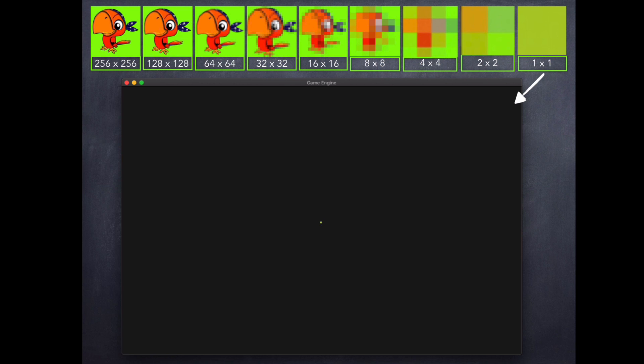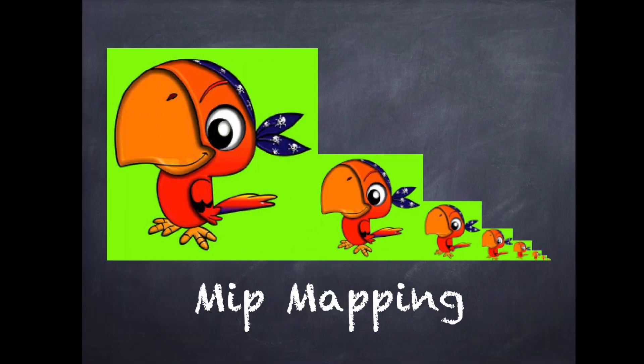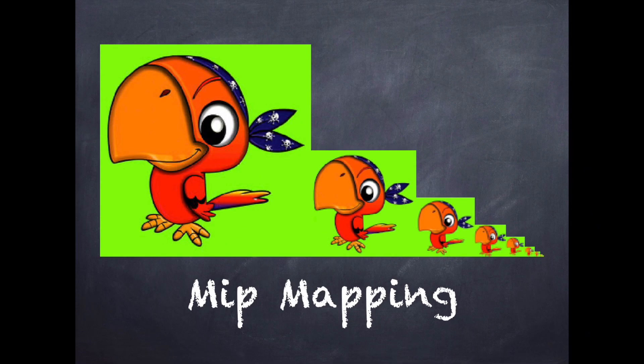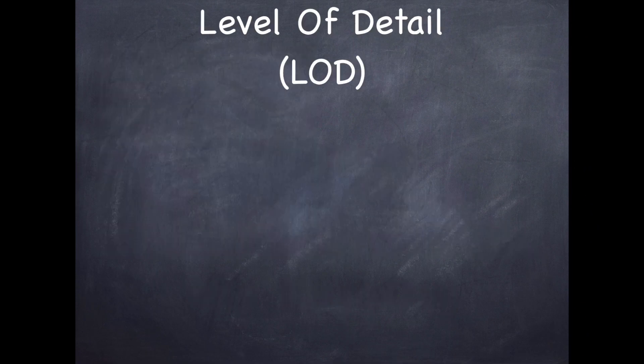This concept is known as mip mapping. All it is is taking one base image and dividing the width and height by two, repeatedly, until you finally have a one by one pixel at the very end. The second concept that goes alongside this is level of detail.